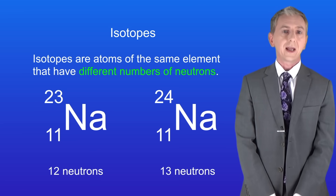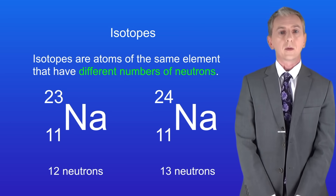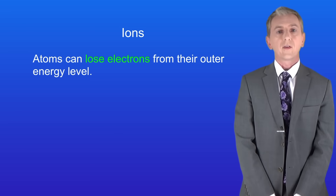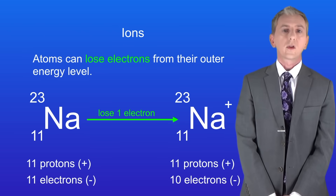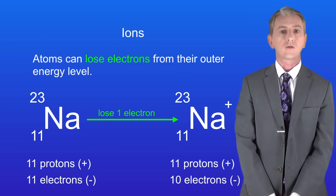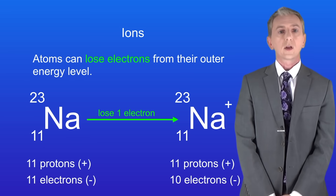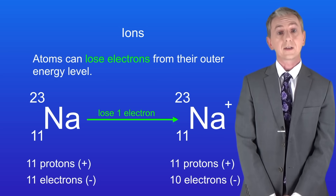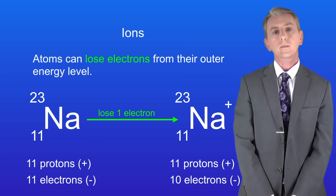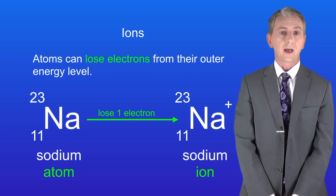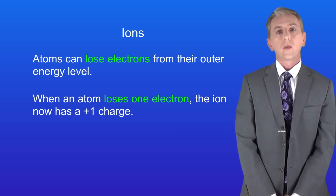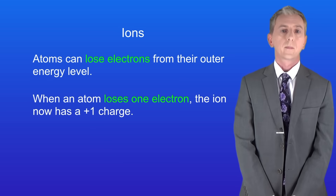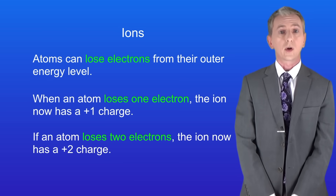The number of electrons in an atom is the same as the number of protons, and that means atoms have got no overall charge. However, atoms can lose electrons from their outer energy level. The sodium atom has 11 protons and 11 electrons, so it's got no overall charge. When a sodium atom loses one electron from its outer energy level it now has 11 protons but only 10 electrons, so it's got an overall charge of plus 1. Scientists call atoms with a charge like this an ion — so this is now called a sodium ion. Remember that when an atom loses one electron the ion has a one positive charge, and if an atom loses two electrons then the ion has a two positive charge.